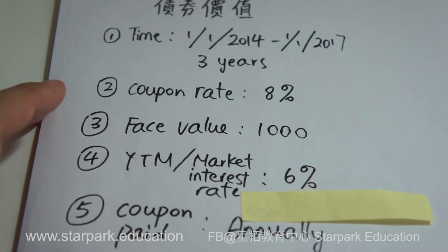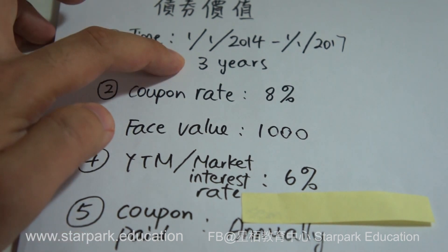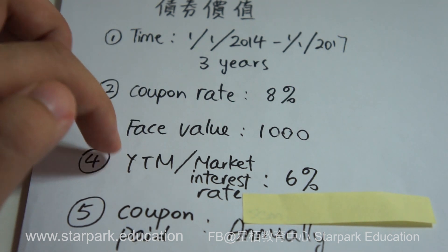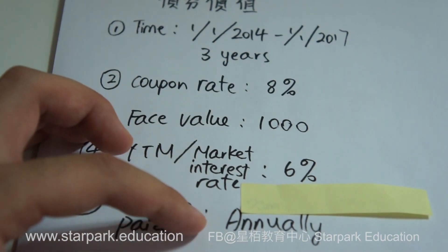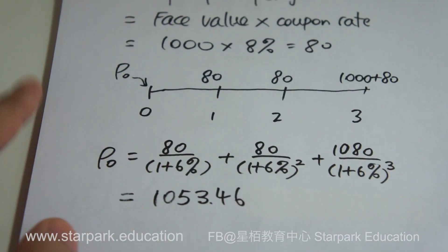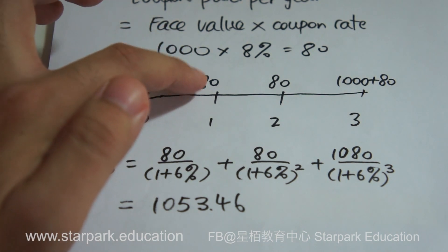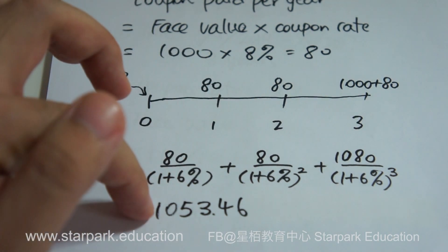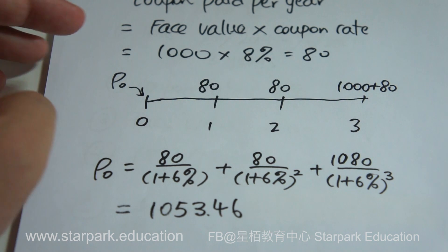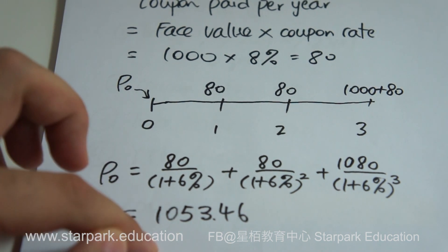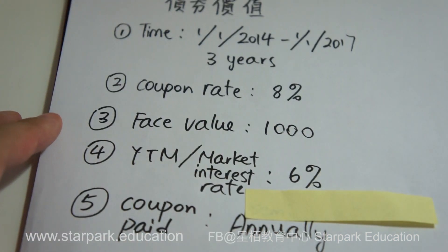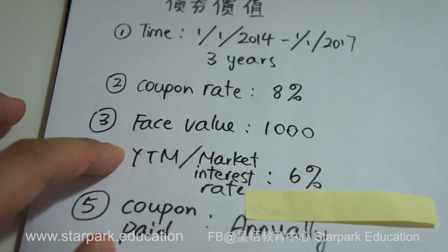We are using the same example as the previous video. The bond is 3 years, coupon rate is 8%, face value is $1,000, and the yield to maturity is 6%, with coupon paid annually. In the last video, we found that the bond price when receiving $80 annually for 3 years is $1,053.46. So now it is the reverse case — suppose the question gives you the bond price of $1,053.46 and asks you to calculate backward.